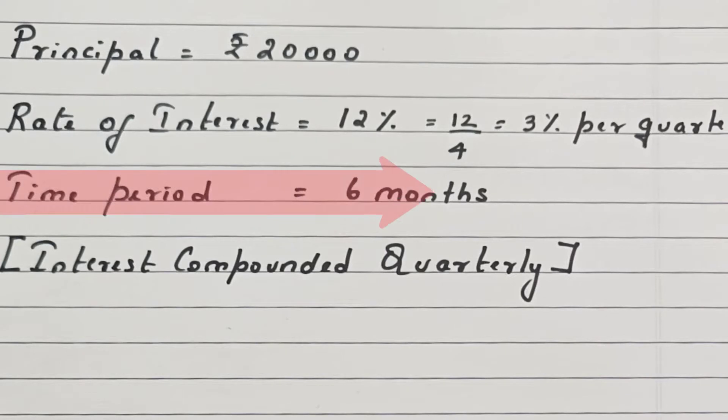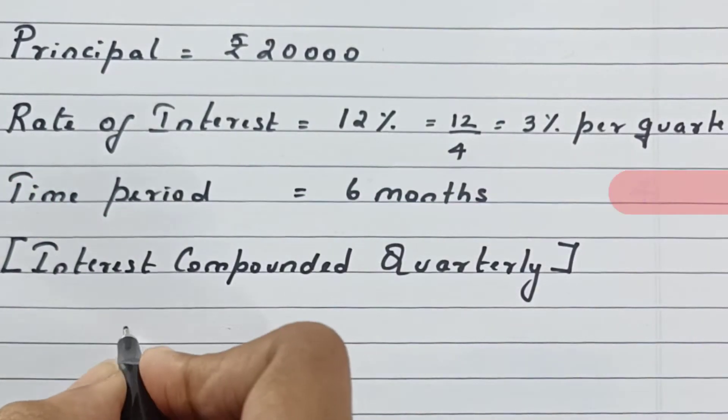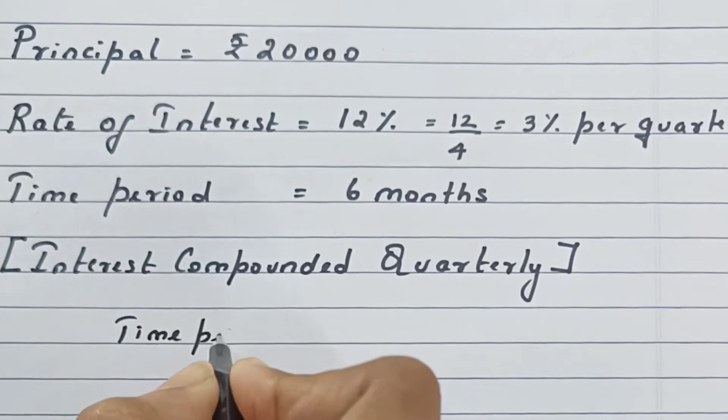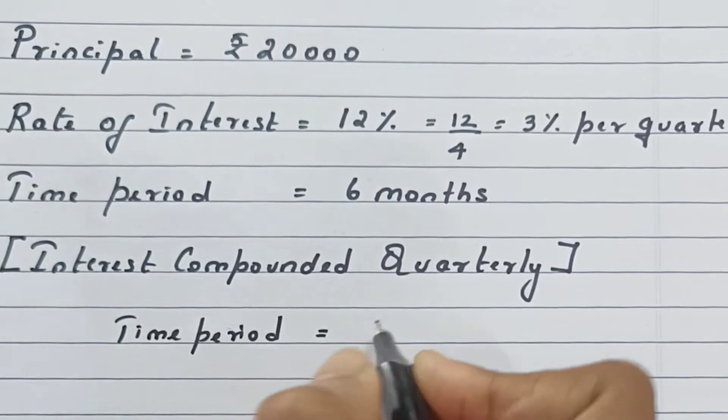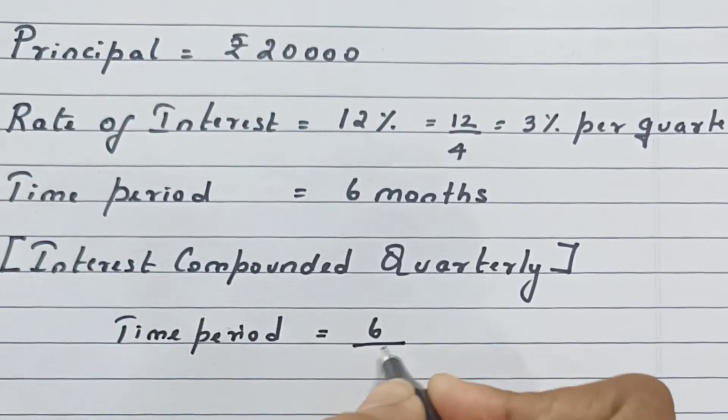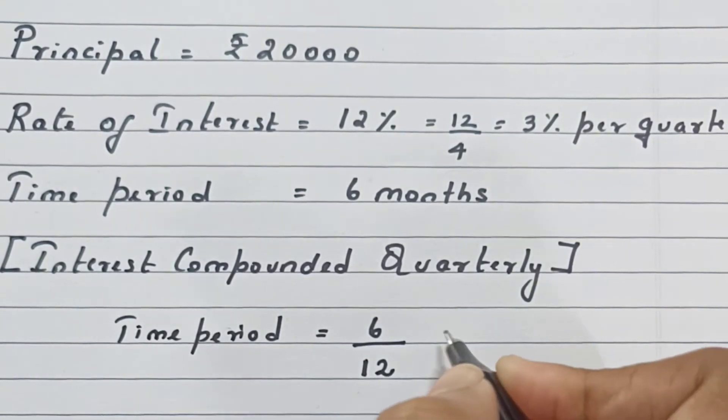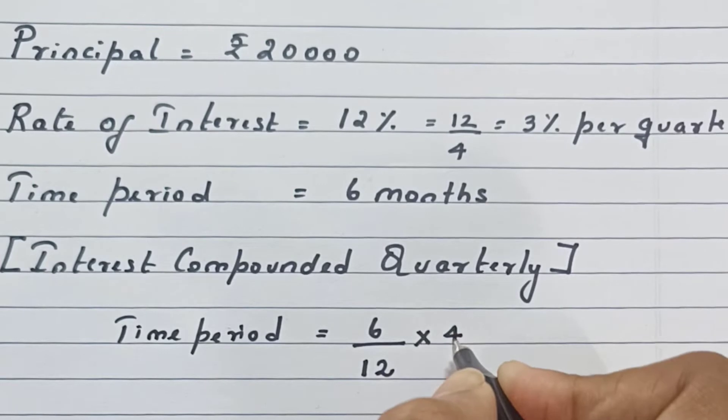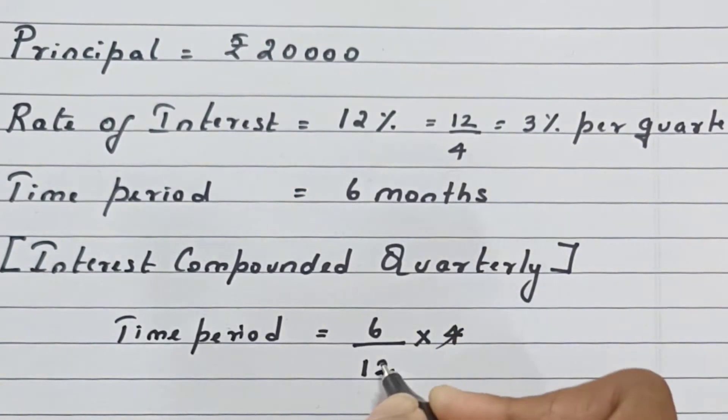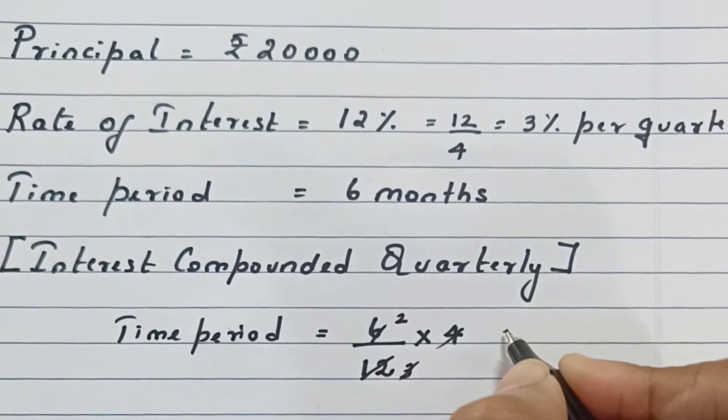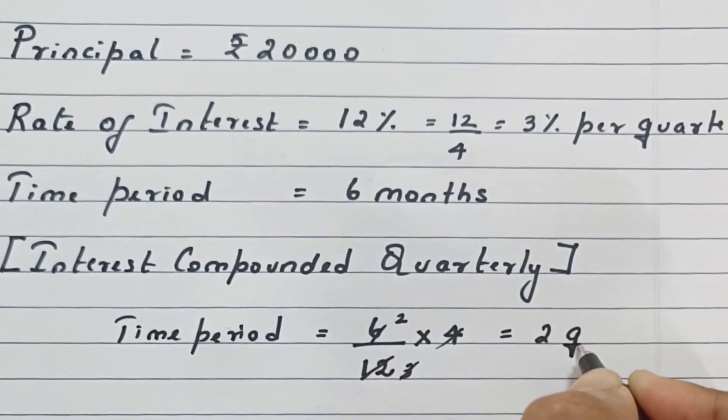Similarly, we need to multiply time period by 4. Since time period is given in months, first let's convert months to years, so divide by 12. And as I had mentioned, we need to multiply the time period by 4. So upon cancellation, four threes are 12, three twos are 6, so we get 2 quarters.